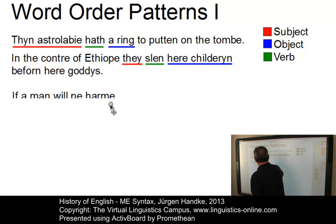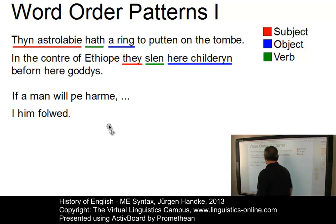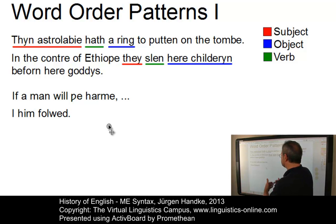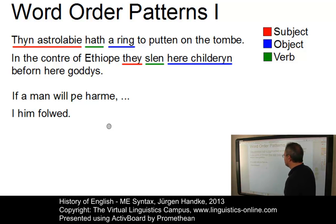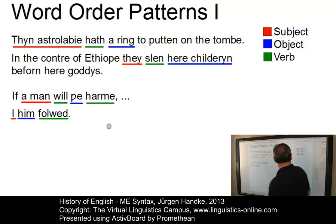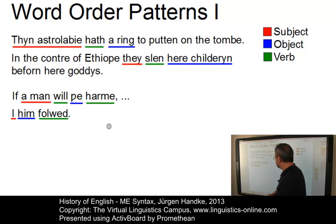Here are further examples. 'I him followed' is clearly SOV. The same applies to the subordinate clause structure in 'if a man will fee harm', which has the same structure: 'a man' is the subject, 'will' and 'harm' form the verb. By the way, 'will' and 'harm' form a so-called brace construction or verbal bracket, which is interrupted by the object 'fee'.